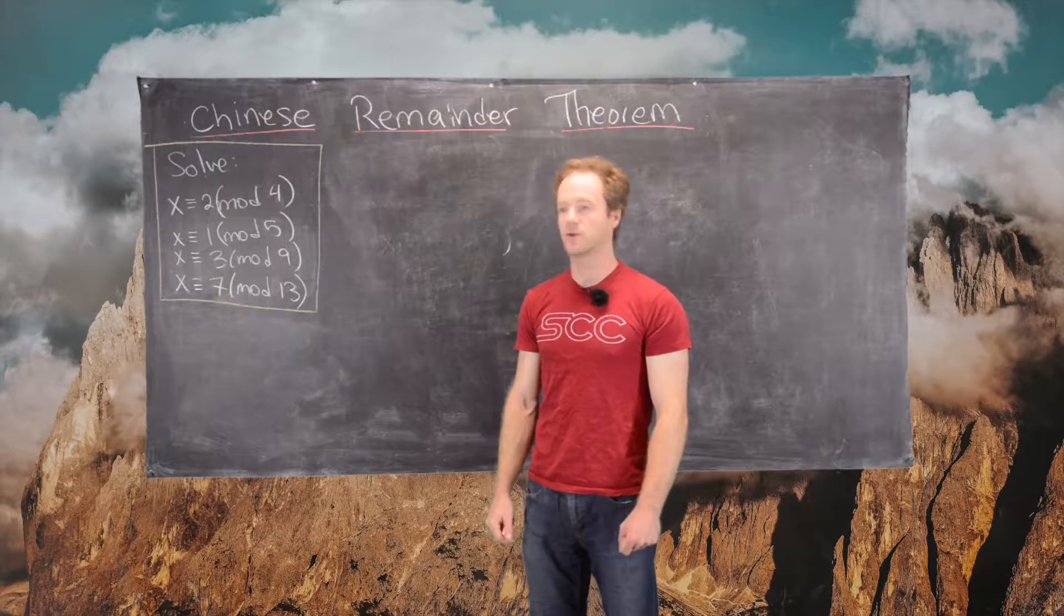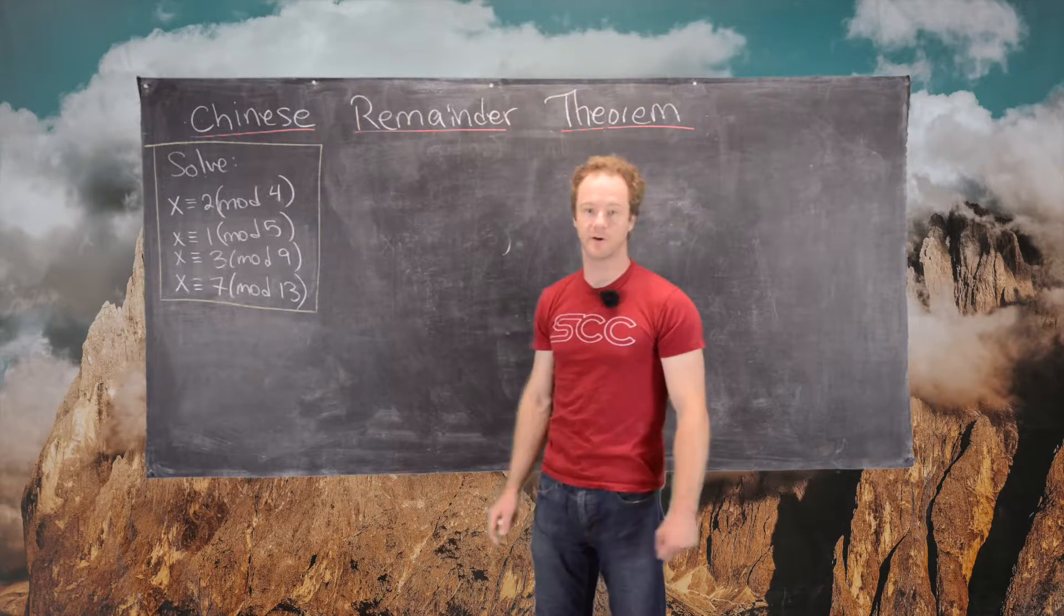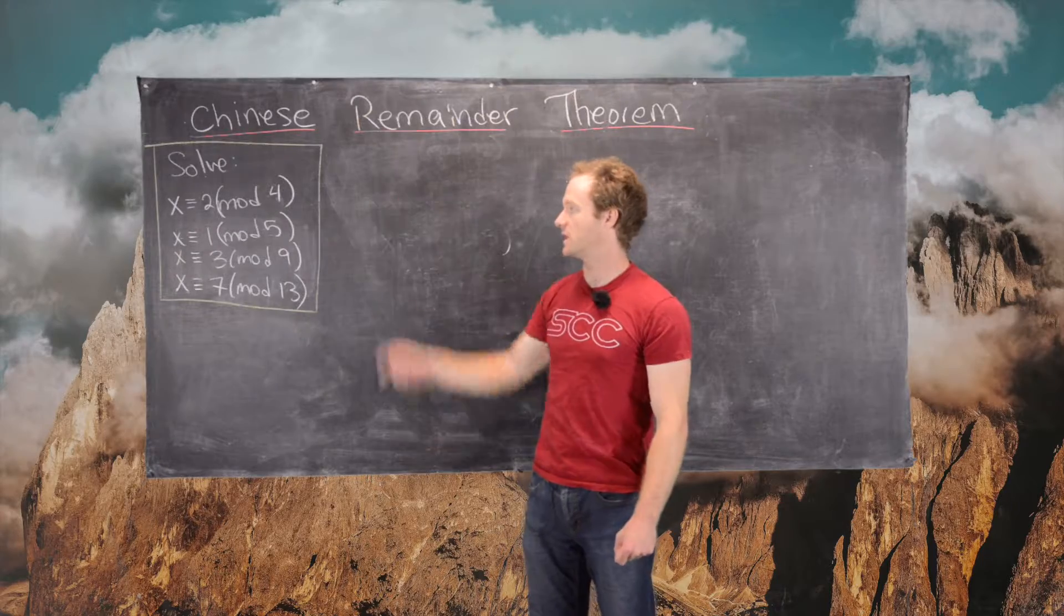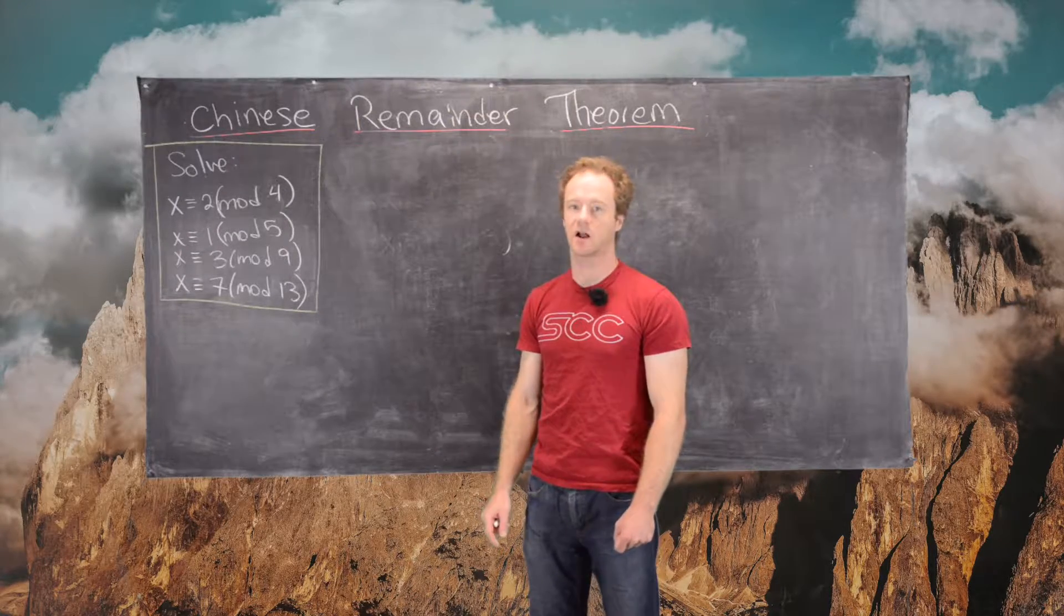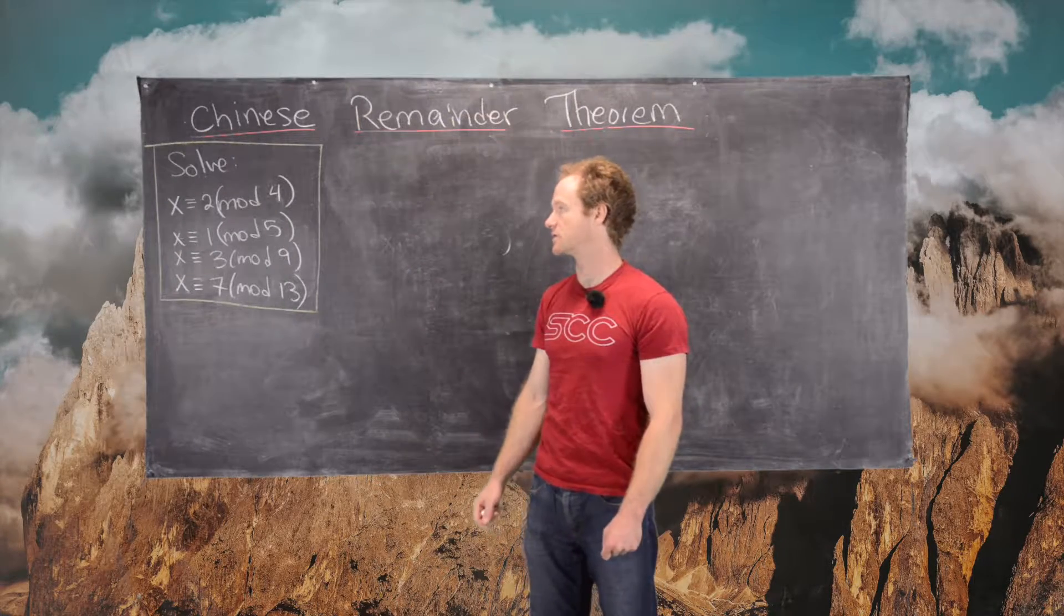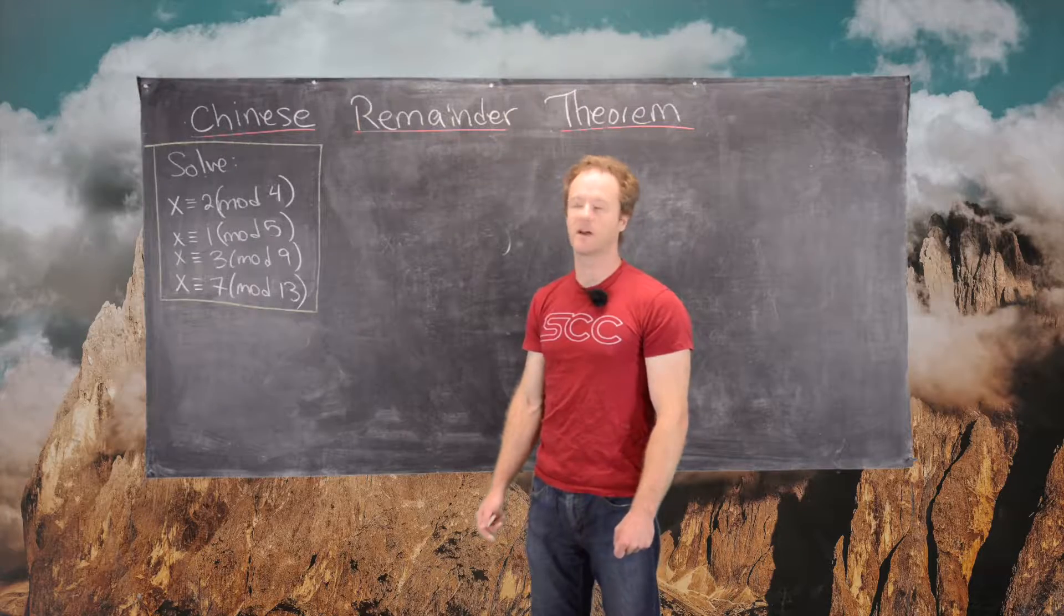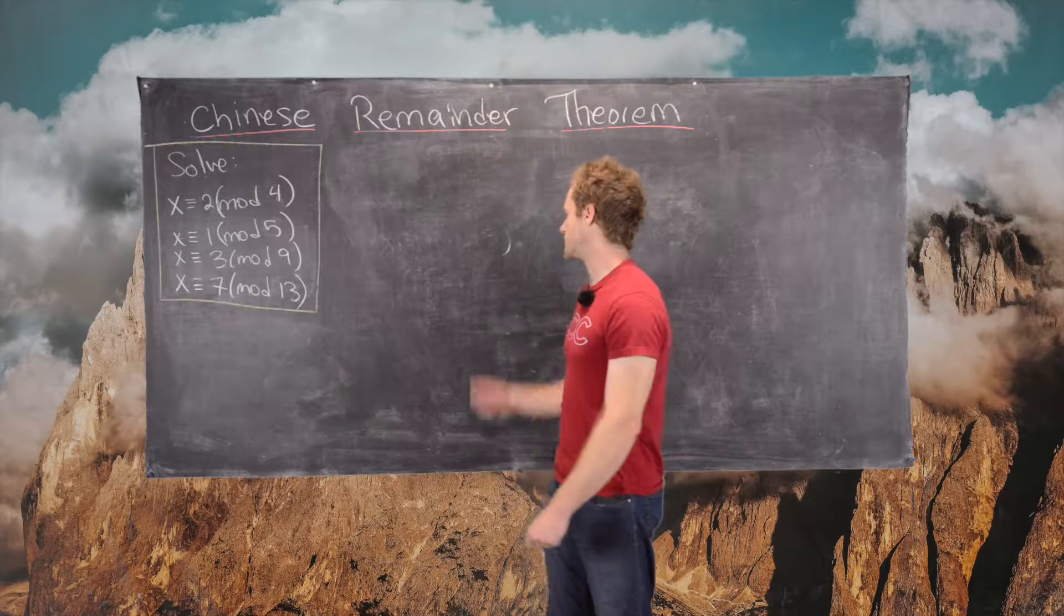Okay, here we're going to do another example of the result of the Chinese remainder theorem. We want to solve the following system of four linear congruences: x is congruent to 2 mod 4, 1 mod 5, 3 mod 9, and 7 mod 13.